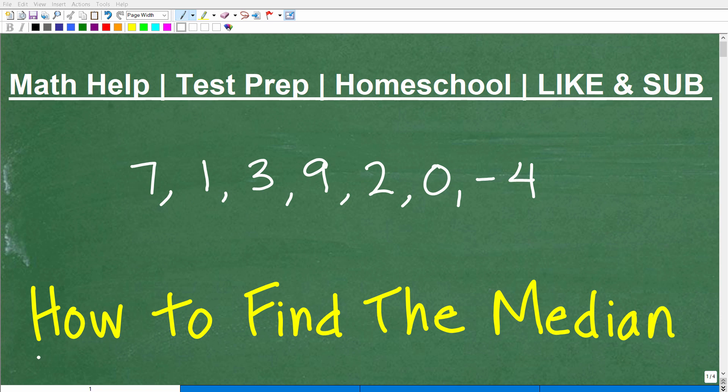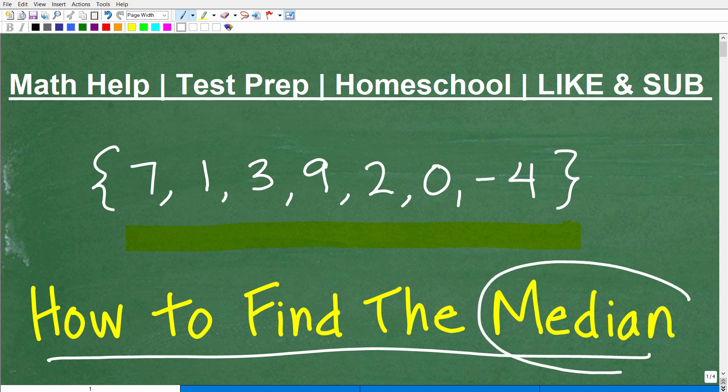Okay, let's talk about how to find the median when you are given a set of data. In other words, you're given a bunch of numbers like this. We would call this technically a data set. This could represent anything. But let's suppose we have the numbers 7, 1, 3, 9, 2, 0, and negative 4, and we want to find the median.